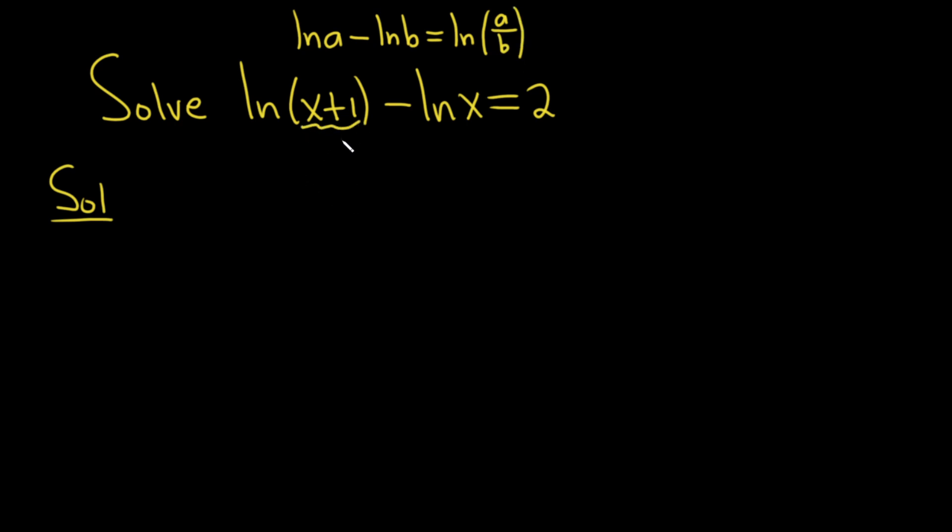So here, this is our a and this is our b. So this is the natural log of a, which is x plus 1, over b, which is x. And all of this is equal to 2. So that's called the quotient rule.